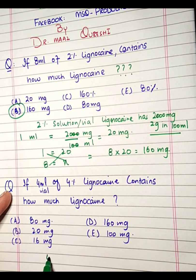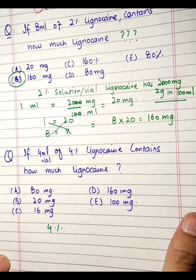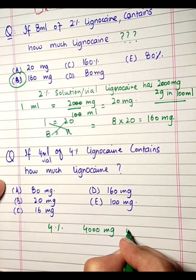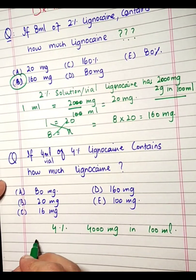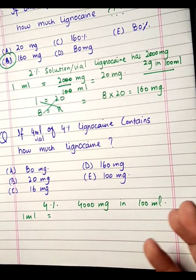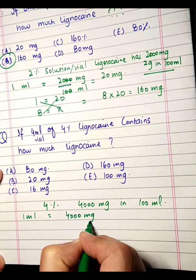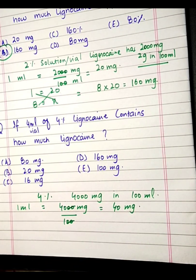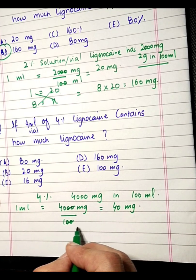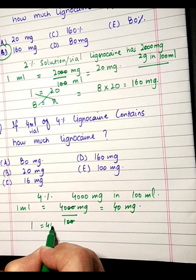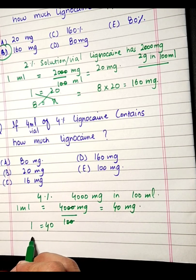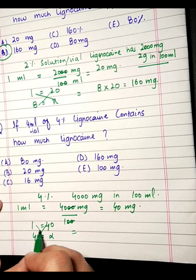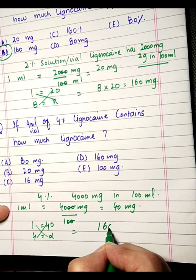Now let's change both the volume and the percentage. Let's do 4%. 4% is basically 4,000mg in 100ml. So 1ml equals 4,000mg divided by 100, which gives 40mg. If 40mg is present in 1ml, how much will you have in 4ml? Cross multiplication: 4 times 40 equals 160mg. The answer is the same — 160mg.